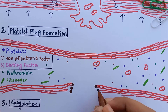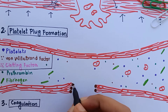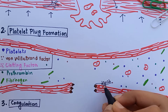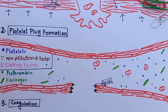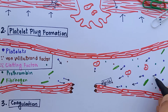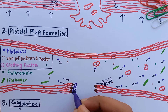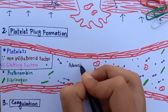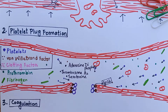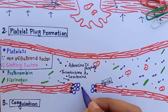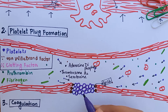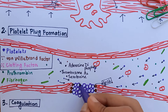When von Willebrand factor comes in contact with collagen of the damaged vascular surface, it adheres to exposed collagen and expresses a receptor called glycoprotein 2b. Platelets get attracted to this receptor and readily attach to von Willebrand factor via glycoprotein 2b. These attached platelets secrete large quantities of adenosine diphosphate, thromboxane A2, and serotonin. These substances activate other platelets and cause them to adhere to the original activated platelets, leading to platelet aggregation and forming a platelet plug.